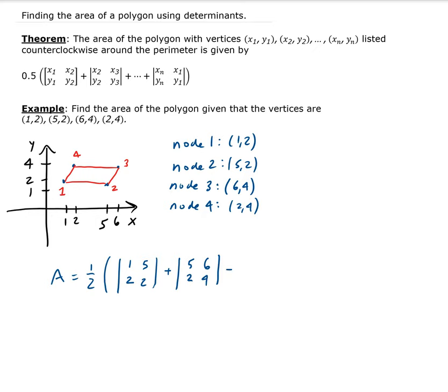And the second column. Then going to the next one, we're going to get 6, 4 and 2, 4. And then finally, we get 2, 4, and then back to the original, back to the first node.